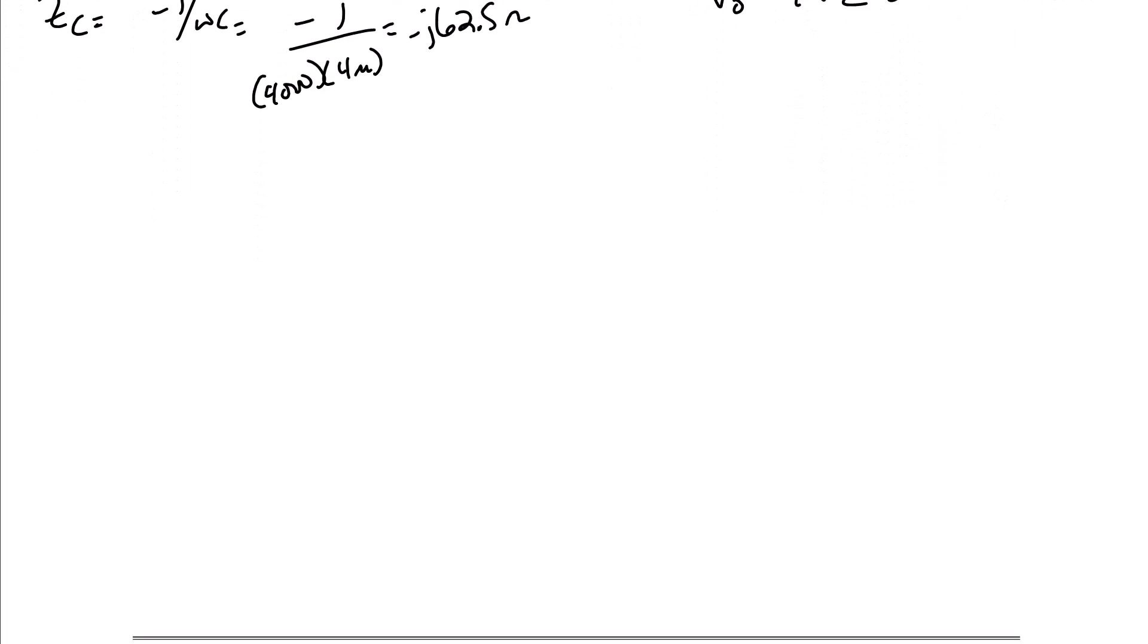So next, we're going to solve this problem again with only the right source on. So the first thing we're going to do is redraw the circuit. So here's our inductor, resistor, capacitor, another resistor here, and our source. So the value of the source is 96 with an angle of zero degrees. And note that the minus is on top.